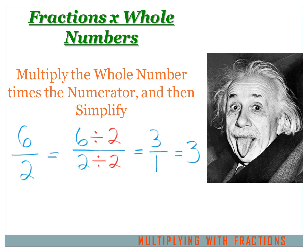6 over 2 equals 6 divided by 2, over 2 divided by 2. That may confuse you, but it really shouldn't, because if I divide any number by 1, I get the same number. And 2 over 2 is just 1. So, 6 divided by 2 over 2 divided by 2 is the same thing as 6 divided by 2. So, 6 divided by 2 equals 3, and 2 divided by 2 equals 1. So my answer is 3 over 1, which I can simplify further to 3, and that's the answer.